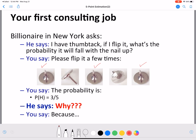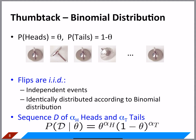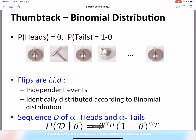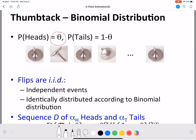Using this data you say the probability of the thumbtack landing nail-up is three out of five. This looks simple, but it is actually coming from maximum likelihood estimation, because the thumbtack follows a binomial distribution. Let's say the probability of the thumbtack landing nail-up is theta, and the probability of it landing on its side — for simplicity, tails — is one minus theta.